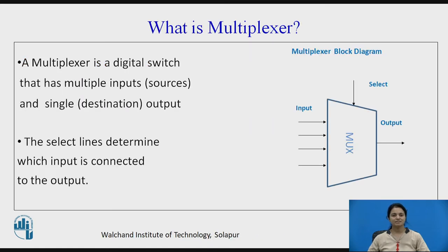What is a multiplexer? A multiplexer is a digital switch that has multiple inputs or sources and a single destination, that is the output. The select line determines which input is to be connected to the output. We can see in the block diagram that there are 4 inputs, 1 output, and 1 select line.